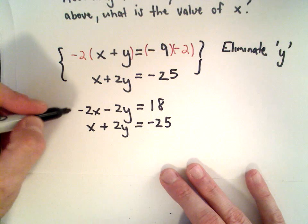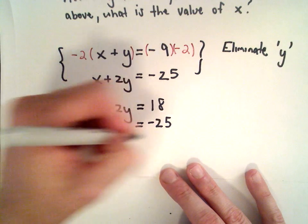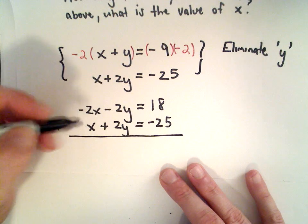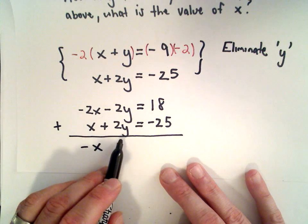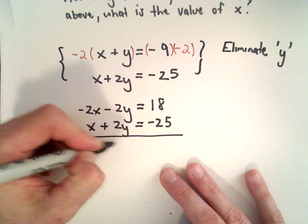And now I'm going to do my elimination by addition. So negative 2x plus x, that's going to leave me with negative x. Negative 2y plus 2y, well, that's 0y, and that's what we wanted.